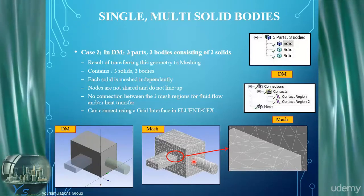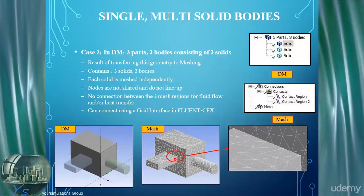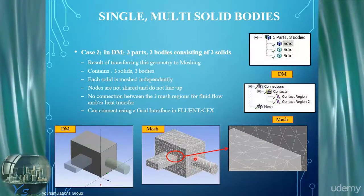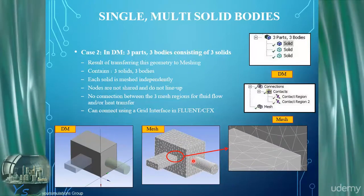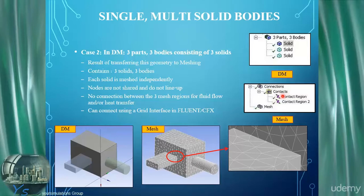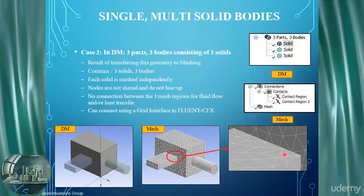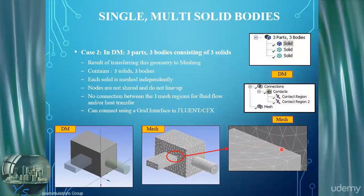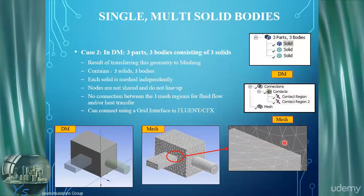You may actually want a non-conformal interface to allow, for example, fluid to pass across these regions. If not needed, you can delete these contact regions. This simply demonstrates that if bodies are in separate parts, there won't be any imprinting or sharing of topology, and the meshes will be non-conformal.